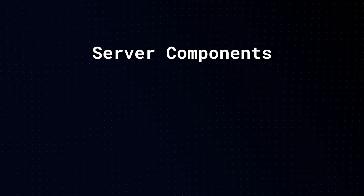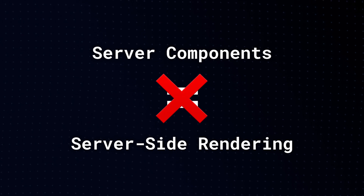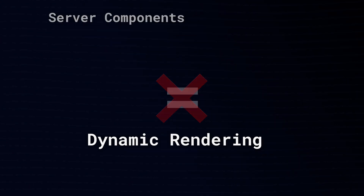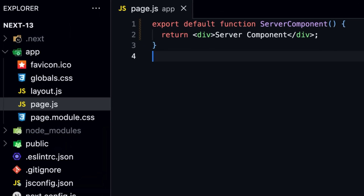Next.js 13 also introduced server components, and this may be confusing to some. Are server components the same as server-side rendering? No, they are not. This is probably why Next.js renamed server-side rendering to dynamic rendering — to avoid confusion. In Next.js 13, all components are server components by default. With server components, the HTML is pre-rendered on the server and then sent to the client. However, server components are not hydrated on the client, meaning they are not interactive — you cannot use state or React hooks with server components. Server components were introduced in React 18, and Next.js 13 has officially adopted them.